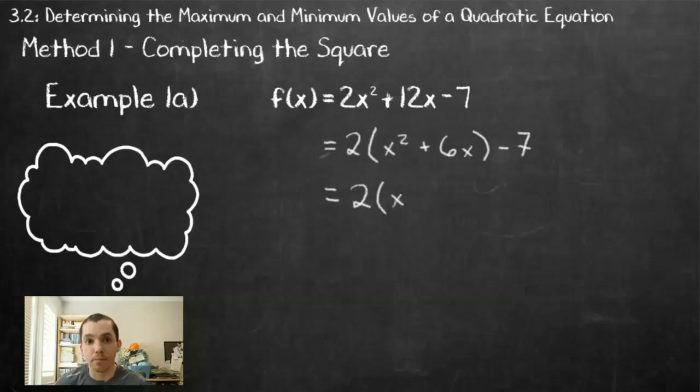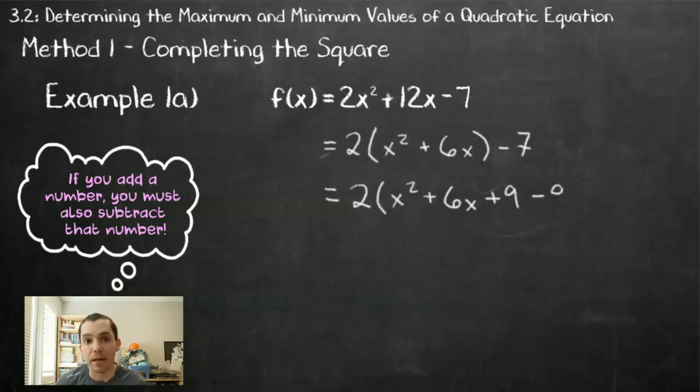My next step, I want to turn that binomial into a perfect square trinomial. So I'm going to take my b value, 6, divide it by 2, 3, and square it to get 9, and I'm going to add 9. Now I can't just add 9, I also have to subtract 9 in order to keep the function the same.